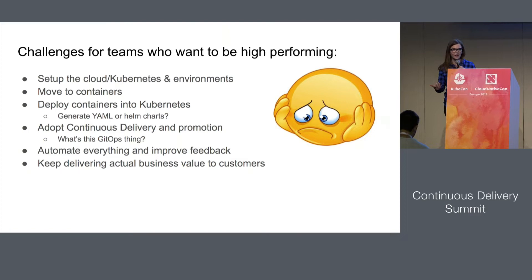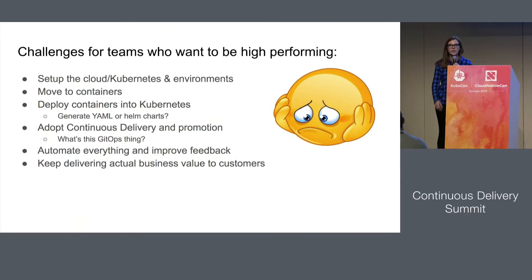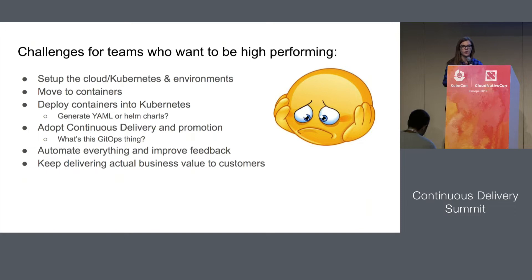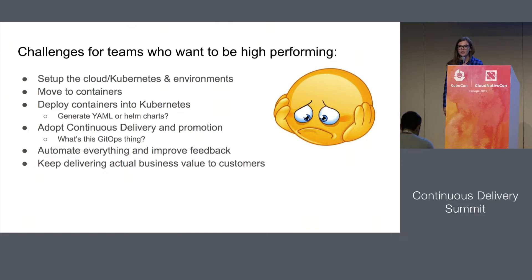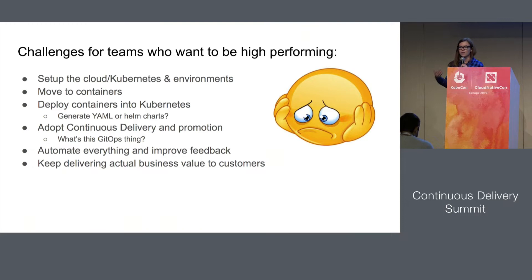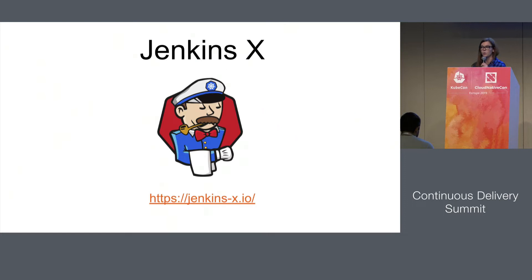The trouble is this magical landscape of microservices, orchestration, Kubernetes, and containers doesn't come for free. There's quite a bit of challenge to get from your current world into that future-facing cloud-native world. A lot of problems development teams encounter include setting up the cloud and your Kubernetes environment, moving to containers, doing lift-and-shift, greenfield, or brownfield projects. Deploying those projects into Kubernetes is very challenging. All of these things introduce friction and make it harder for teams to adopt cloud-native technologies — which is why we started working on Jenkins X.